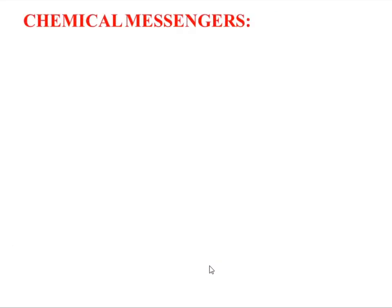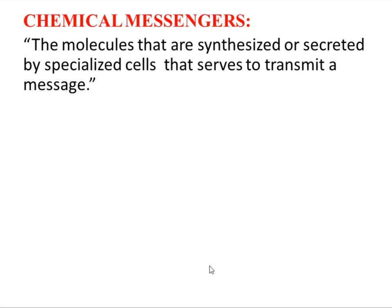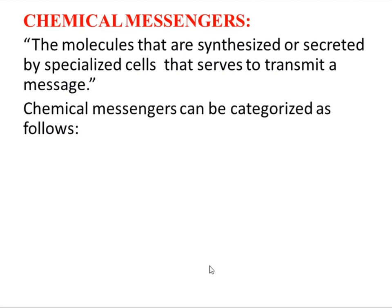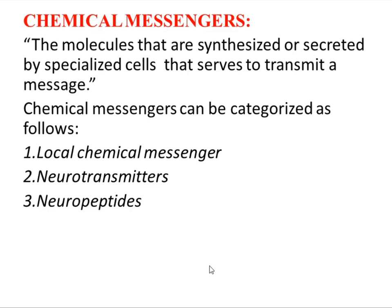The topic we have to start today is chemical messengers. These are molecules that are synthesized or secreted by specialized cells that serve to transmit a special message. These chemicals are used by specialized cells to convey or transmit a special message. They may be categorized into different categories: local chemical messengers, neurotransmitters, neuropeptides, hormones, and pheromones.